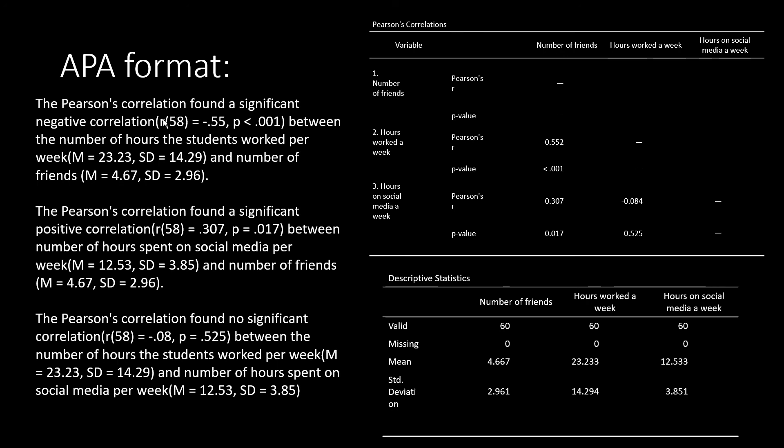We then want to convey the information about that particular correlation and its magnitude. Here, we have r to symbol a Pearson's r correlation. We're then going to put our degrees of freedom in parentheses right after that r. And to calculate our degrees of freedom, all we need to do is to take our sample size and subtract 2 from it, or n minus 2.